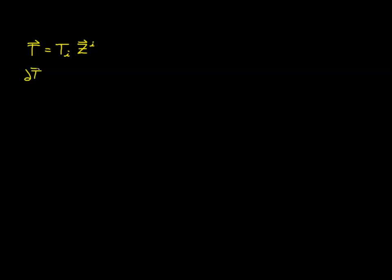So we'll start over here with our vector taken with respect to z_j. On the right-hand side, of course, we have to use the product rule. So we'll take the partial of our component t_i with respect to z_j.